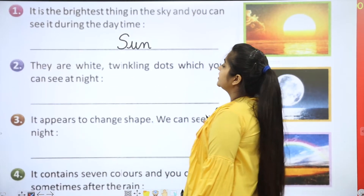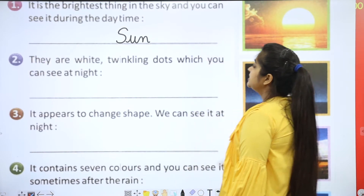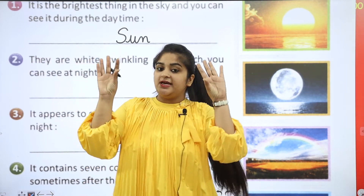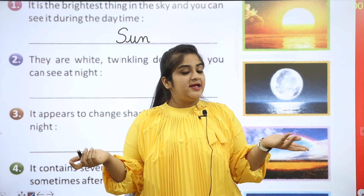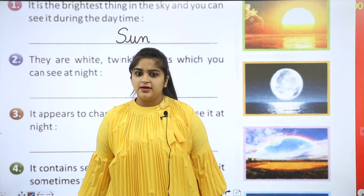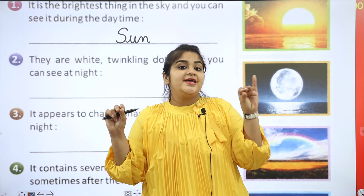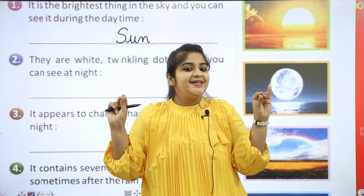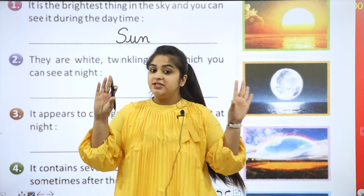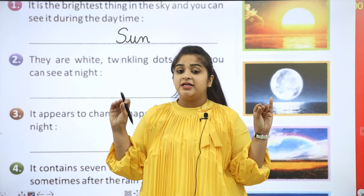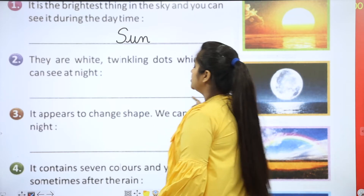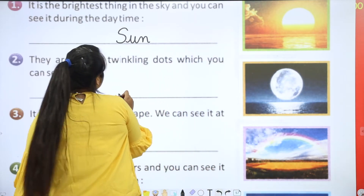They are white twinkling dots which you can see at night. Twinkle twinkle little stars — and the answer is stars. Those white colour twinkling dots that you can see at night, they are stars.